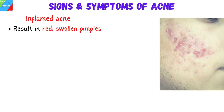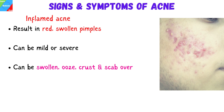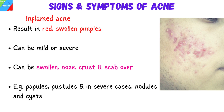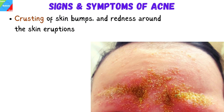Inflamed acne breakouts result in red, swollen pimples. Inflamed acne can be mild, with just occasional breakouts, or it can be more severe, resulting in deep blemishes. They can be swollen, ooze, crust, and scab over. Inflamed acne breakouts include papules, pustules, and in severe cases, nodules and cysts. The most severe symptoms are seen in cystic acne, which can lead to scarring and usually takes a long time to heal. Other skin changes caused by acne include crusting of skin bumps and redness around the skin eruptions.